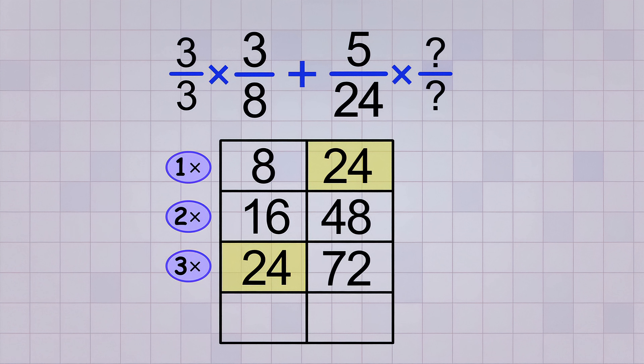And our common multiple for 24 was just itself. We multiplied by 1, so we could use the whole fraction 1 over 1, but we really don't need to since multiplying by 1 won't change anything. We already have the denominator of 24 on that side, so we don't need to change it.